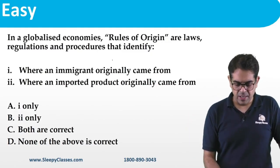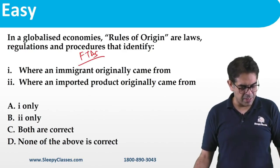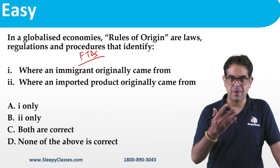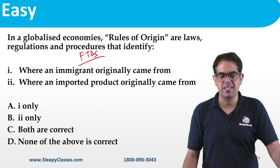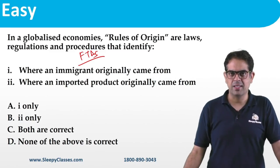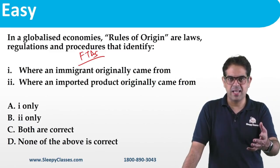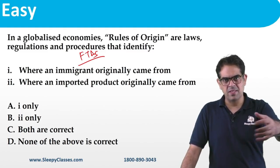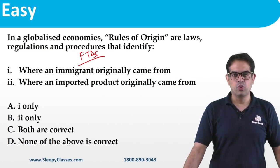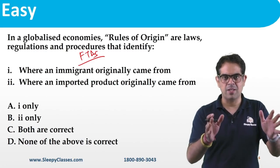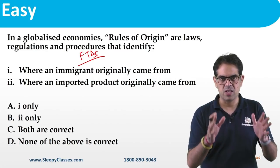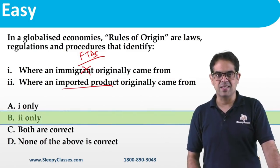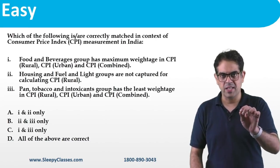Rules of Origin are important in free trade agreements (FTAs). When India signs an FTA with a country like UAE, only goods originating from that country can move freely. If UAE imports goods from Pakistan and tries to send them to India as UAE goods, India will ask for proof of origin. Rules of Origin define what percentage of a product must have been made in the partner country — this is why they are crucial in FTAs, and India has been a strong proponent of this.